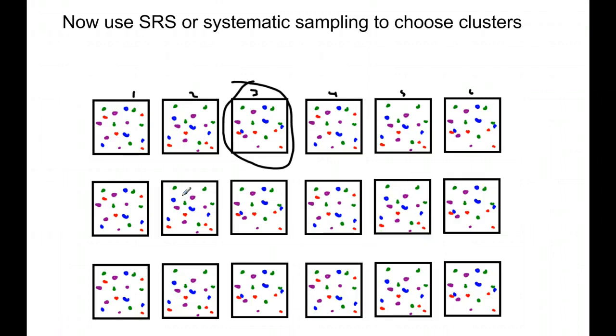Another way I could use systematic, so let's say I generated the random number 3, and every sixth of the group I'm going to interview. So in which case, it would be this group, this group, and this group here. And so these three would form my sample.